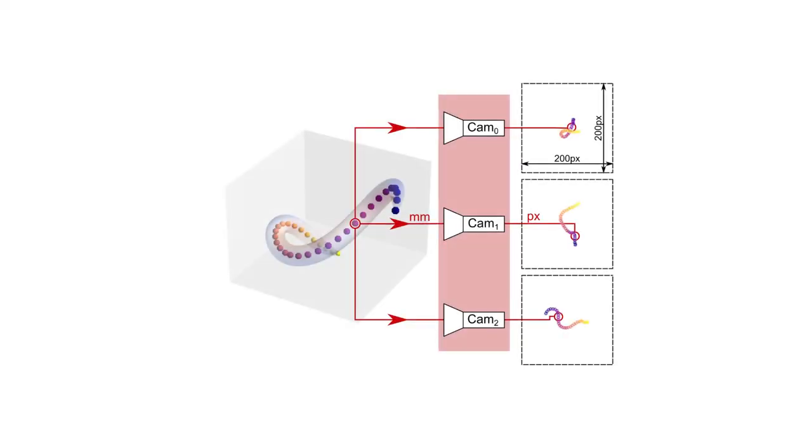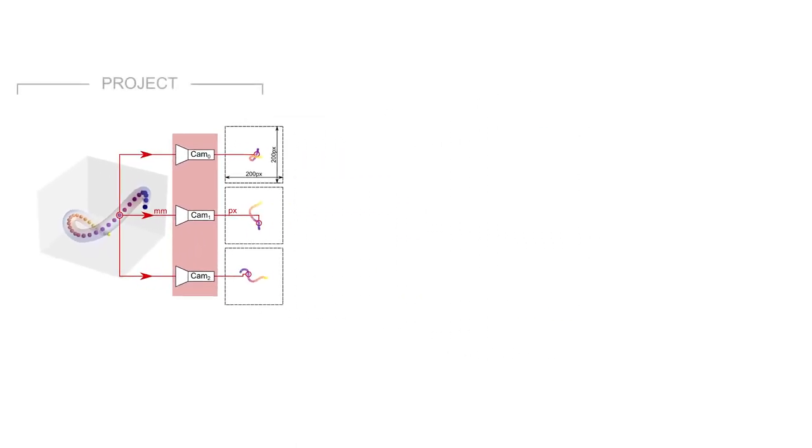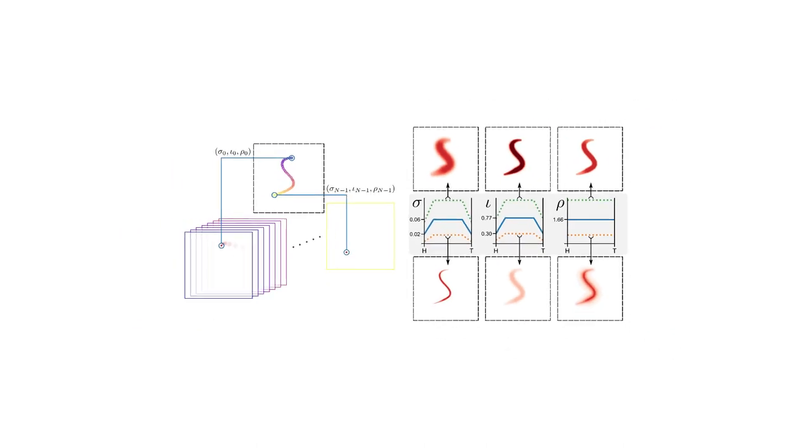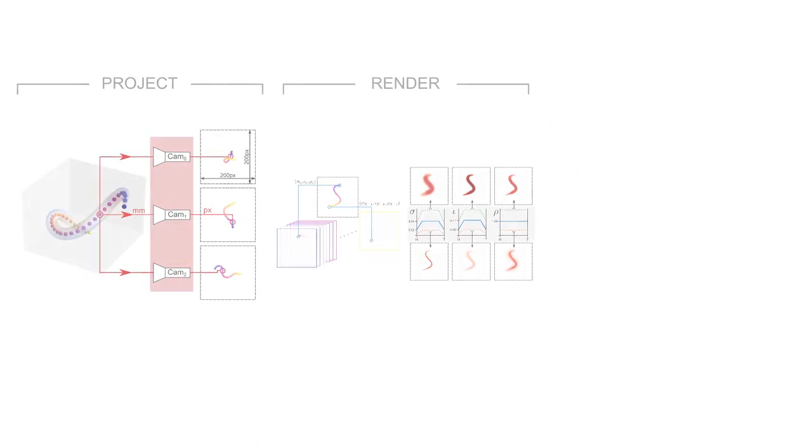To account for the changing optics, we develop a novel differentiable renderer to construct images from 2D projections of the candidate 3D curve and compare against raw images to generate a pixel-wise error.